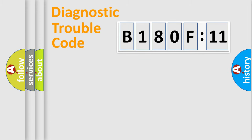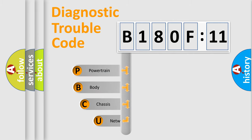Powertrain, Body, Chassis, Network. This distribution is defined in the first character code.